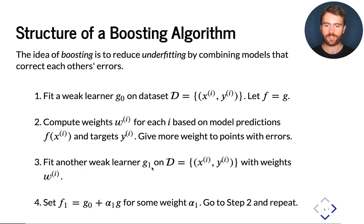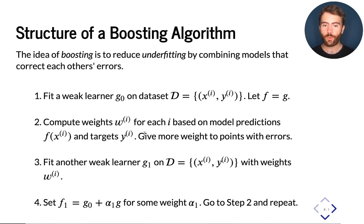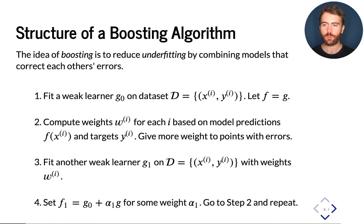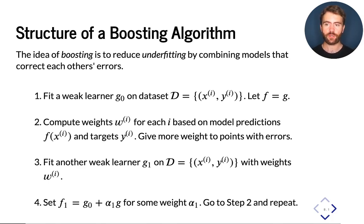Now that we have the second weak learner trained to fit the error of the previous model, we add it to our ensemble with some weight alpha that determines how important this new base learner is. We then go back to step two, recompute the weights, train another weak learner, and repeat steps two, three, and four until we have a sufficiently powerful model F. At each step, model F becomes more and more expressive because it is the sum of a large number of weak learners that are each accurate on a different subset of the data, and their ensemble achieves good accuracy on the entirety of the training dataset.